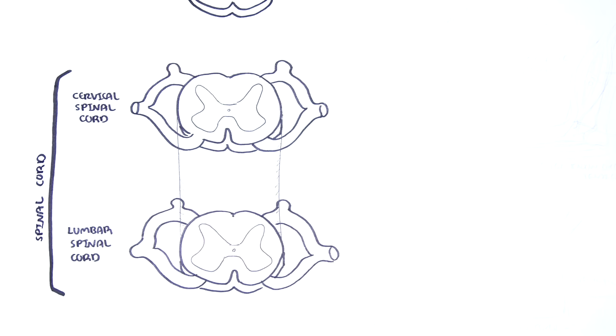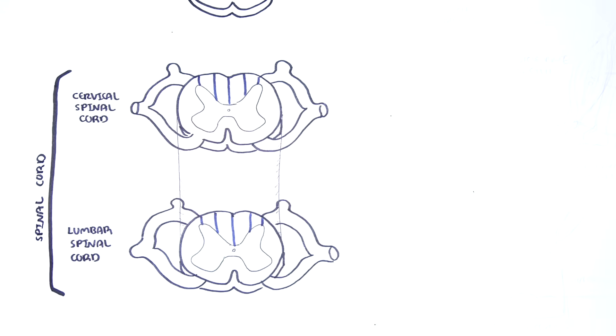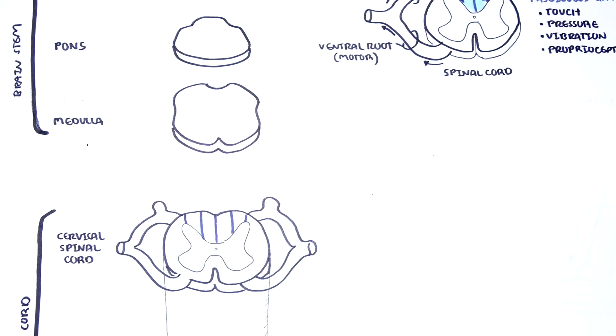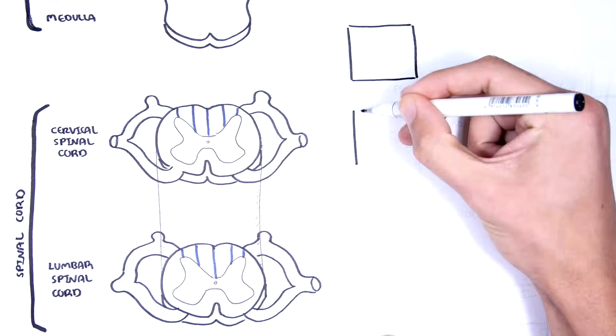The dorsal aspect of the spinal cord is the dorsal column tract, part of the white matter, which carries sensory information on touch, pressure, vibration, and proprioception.